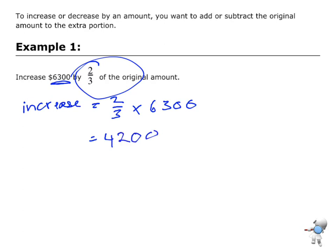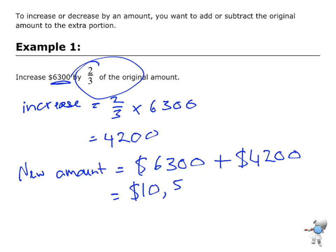Now I'm going to find what the new amount is. The new amount is, originally it was $6,300. I'm increasing that, so I'm adding on another $4,200. That's going to give me a total of $10,500. So that is my new amount.